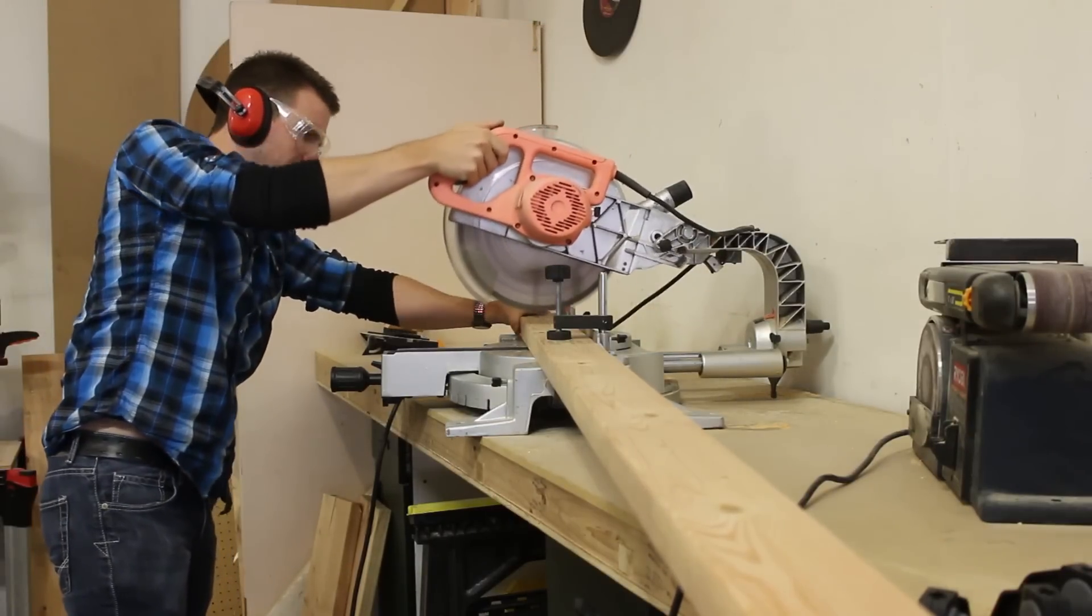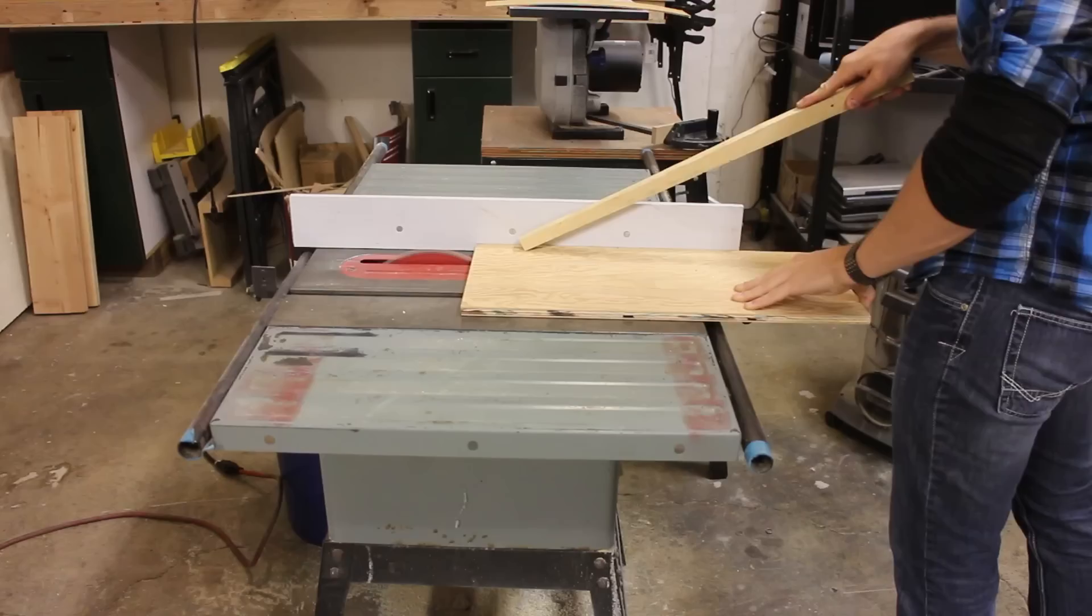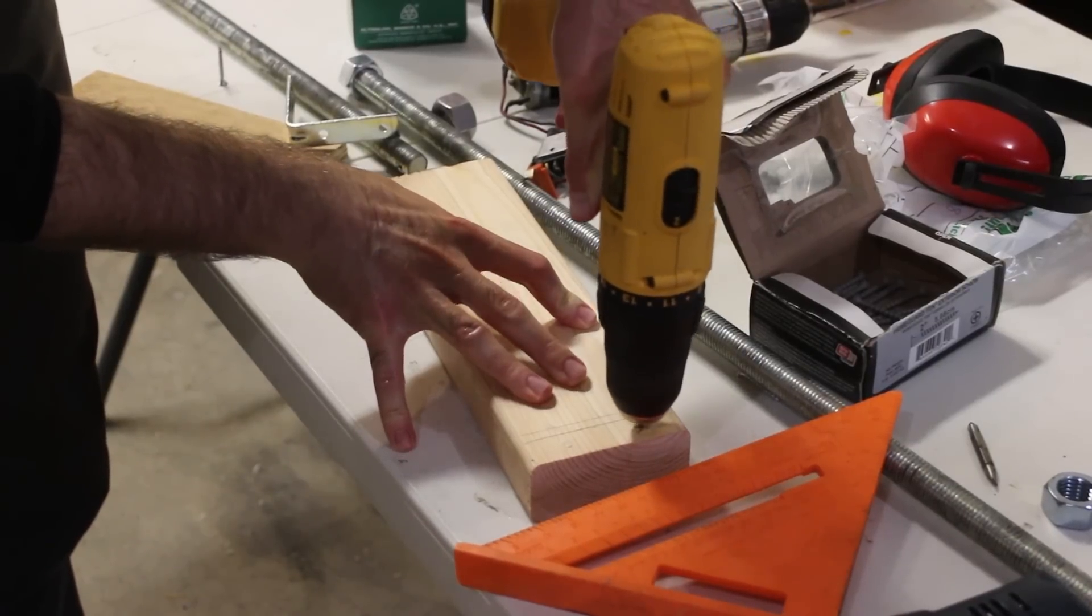We decided to build a really simple shelf out of 2x4s. We basically just cut a small piece of 2x4 and a small piece of plywood and attached some L brackets.